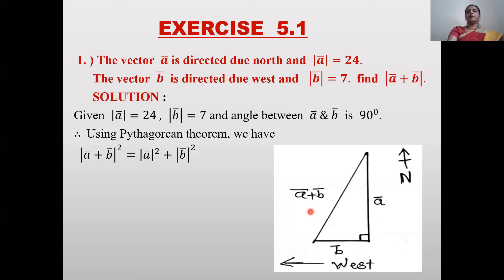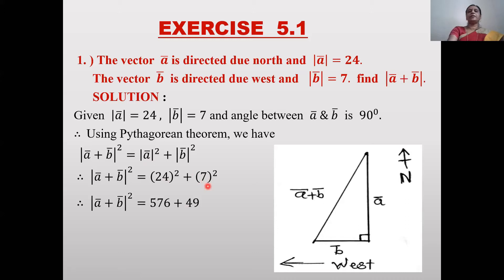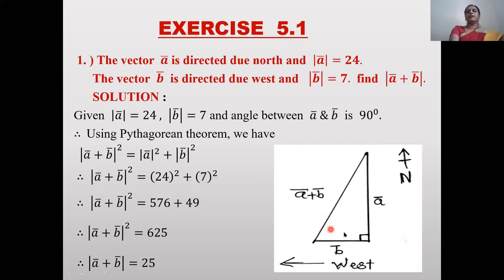According to the Pythagorean theorem, |ā + b̄|² = |ā|² + |b̄|². Keeping the values: 24² + 7² = 576 + 49 = 625. Taking the square root of both sides, we get |ā + b̄| = 25, which is the diagonal of the triangle with sides ā and b̄.